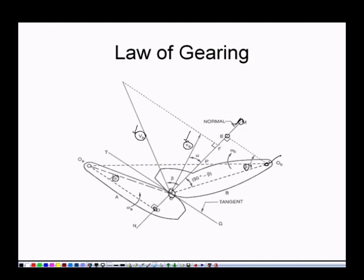Another thing is that this angle is alpha. How is alpha defined? You can see here in the triangle OADNC — one can observe here in triangle OADNC — this one is angle alpha. Here this one is angle alpha, and after that DNC is there. This is another angle, and perpendicular to that we have a perpendicular. So this angle may be considered as 90 minus this angle, which may be taken as alpha. So this angle is also alpha.